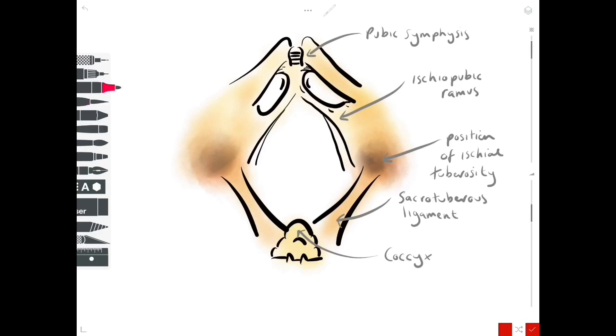It can be converted into two triangles by drawing an imaginary line across the position of the two ischial tuberosities. That gives us an anterior triangle and a posterior triangle.